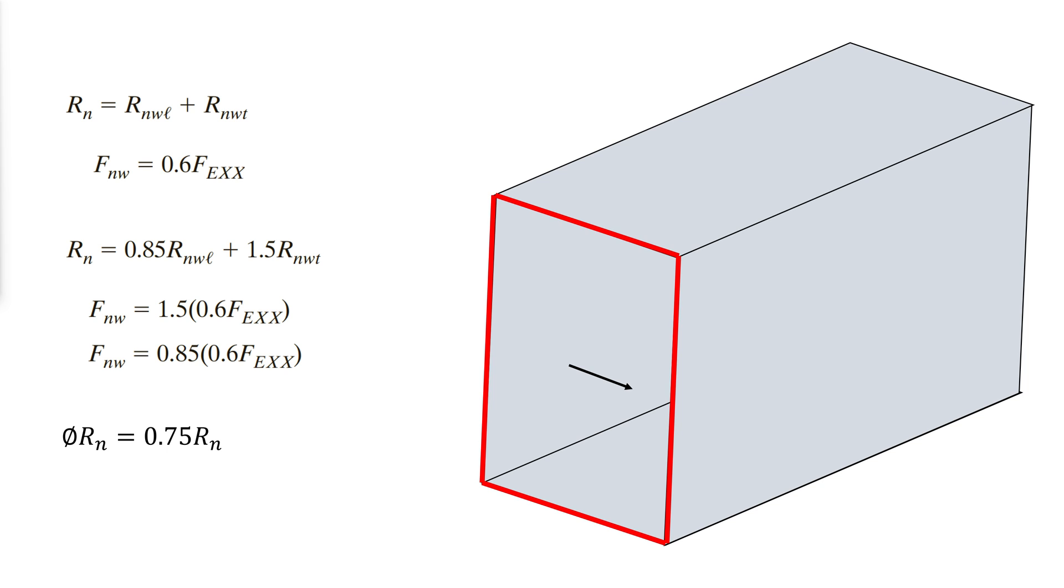For LRFD, the design strength of a fillet weld is phi RN, where phi is equal to 0.75.